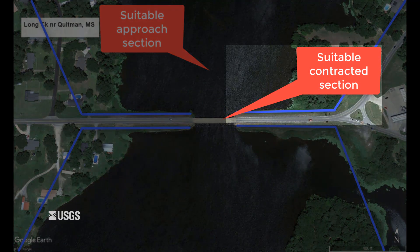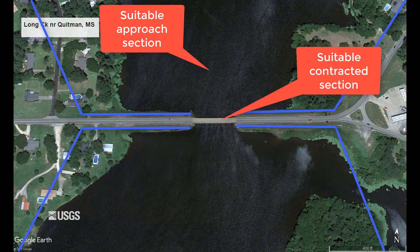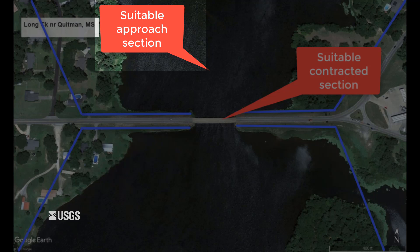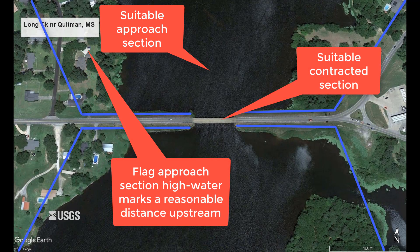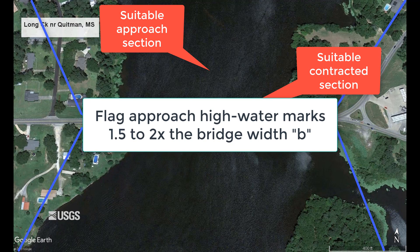For the contracted section, the elevation is determined by surveying high water marks on the downstream embankment. If the high water marks on the downstream embankment are insufficient, continue flagging marks downstream until you can determine your section 3 surface water elevation. When flagging the approach high water marks, it's best to start a reasonable distance upstream of the approach and work your way down to the upstream embankment. This way, you can develop a sufficient profile for determining your approach elevation, as well as the amount of fall due to roughness along the reach, without being too reliant on one or two high water marks. A rule of thumb for determining a reasonable distance upstream is about 1.5 to 2 times the bridge width B.